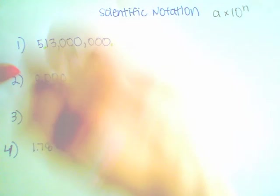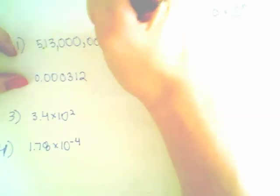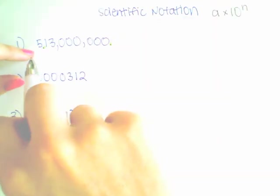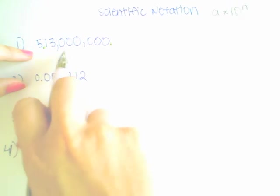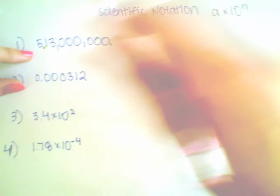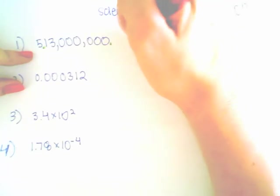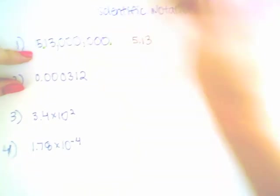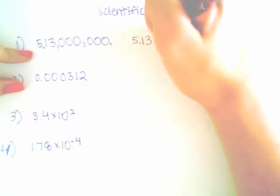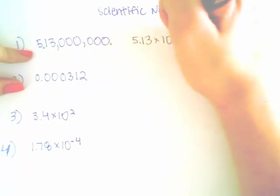Alright, so let's figure out how many places between where I want the decimal and where the decimal is now. So I have 1, 2, 3, 4, 5, 6, 7, 8. So I know that I have 5.13 times 10 to the 8th.